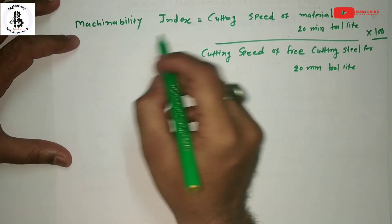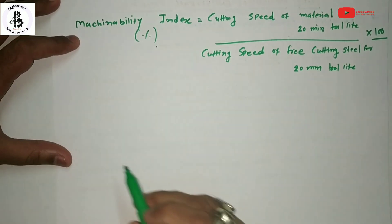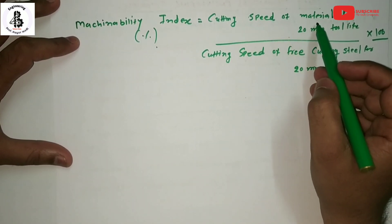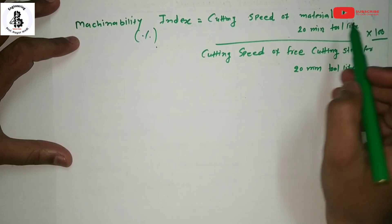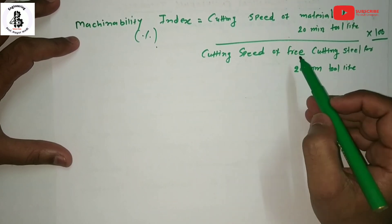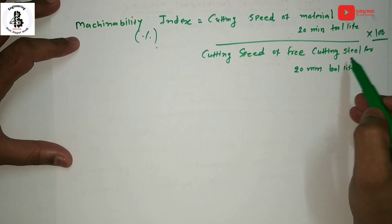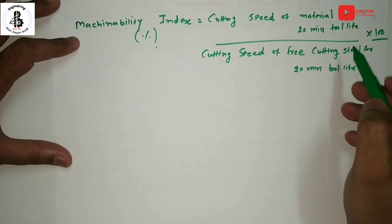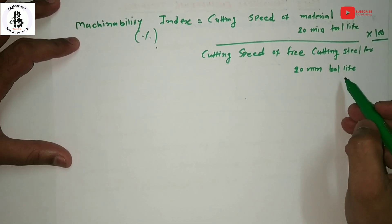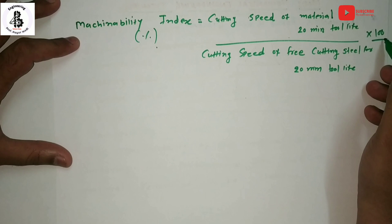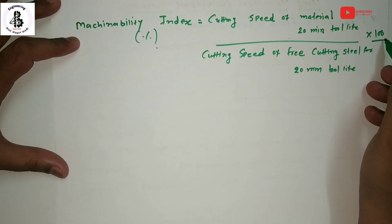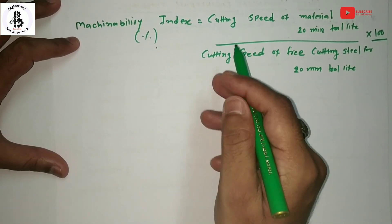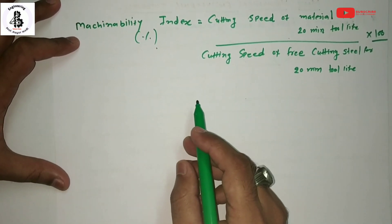The machinability index, expressed as a percentage, is calculated as: (cutting speed of the material for 20-minute tool life) divided by (cutting speed of free cutting steel for 20-minute tool life), multiplied by 100. This allows you to calculate the machinability index for a particular material compared to the standard.